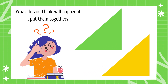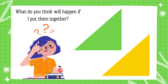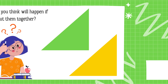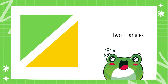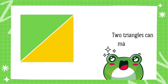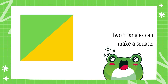Now, let's have some fun with combining shapes. Look at these two triangles. What do you think will happen if I put them together? Look at that! Two triangles can make a square. Isn't that amazing?